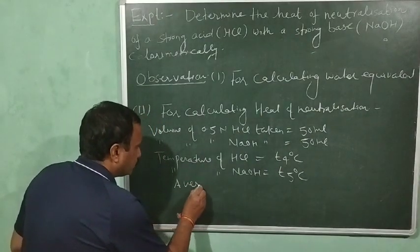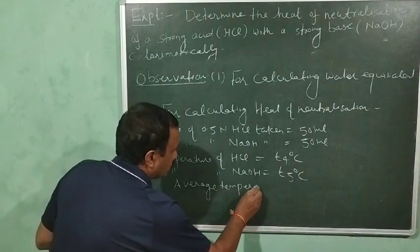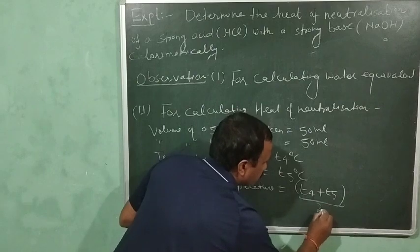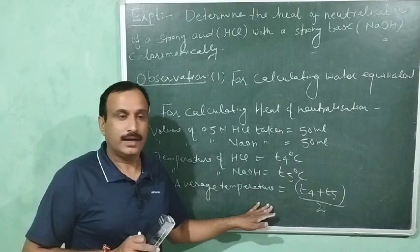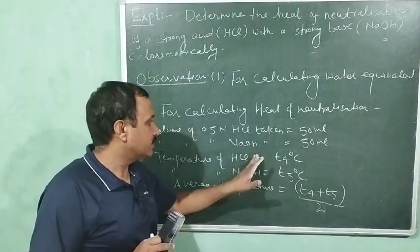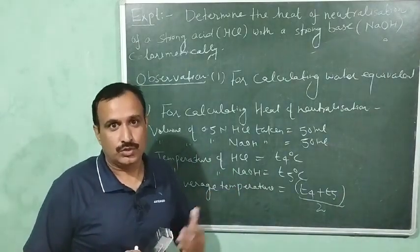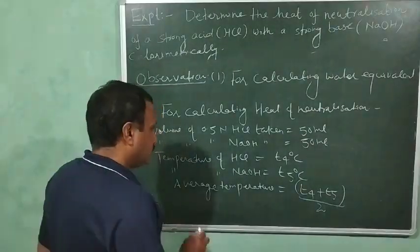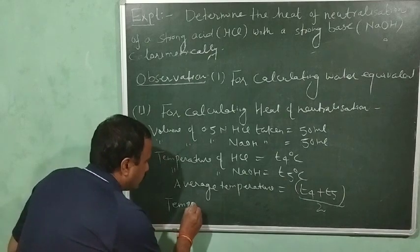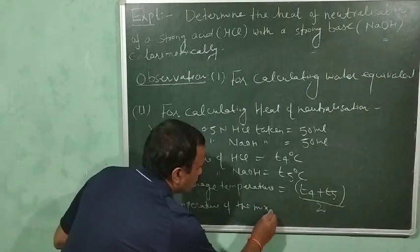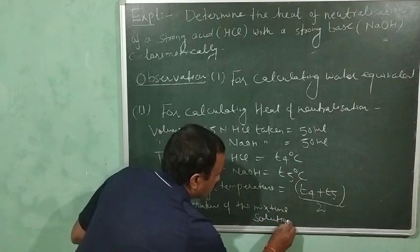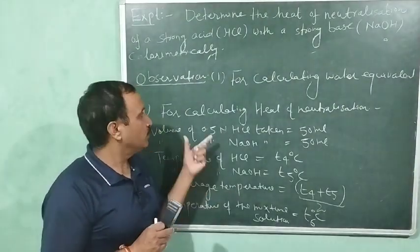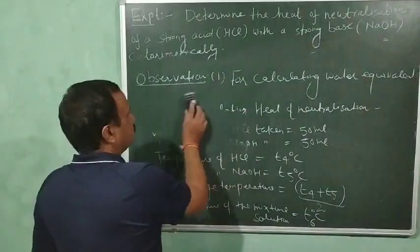The temperature of 0.5 normal HCl is T4 degrees Celsius, and the temperature of NaOH is T5 degrees Celsius. The average temperature is (T4 + T5) / 2, and we take this as the initial temperature of both HCl and NaOH for calculating the rise in temperature. The temperature of the mixture solution is T6 degrees Celsius.